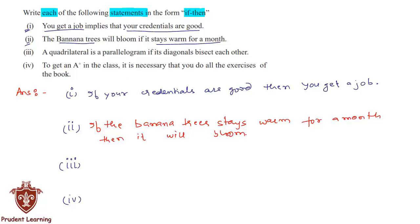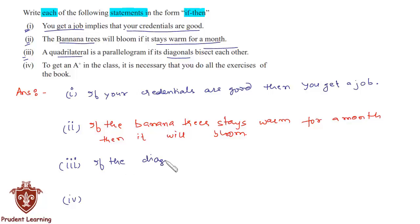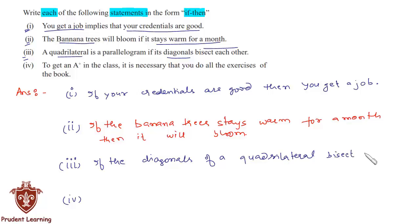For the third section, the given statement is: 'A quadrilateral is a parallelogram if its diagonals bisect each other.' We can rewrite it as: 'If the diagonals of a quadrilateral bisect each other, then it is a parallelogram.'